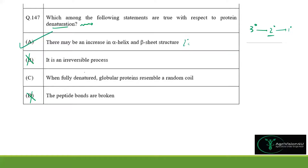Option C: when fully denatured, globular proteins resemble a random coil. Globular proteins have more tertiary structures. When denatured, bonds other than peptide bonds — such as hydrogen bonds — break, leaving no particular bonding. Only the peptide bonds and peptide structure remain, so the protein will resemble a random coil.